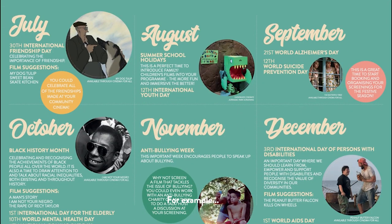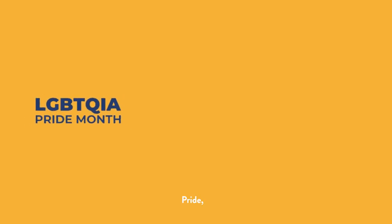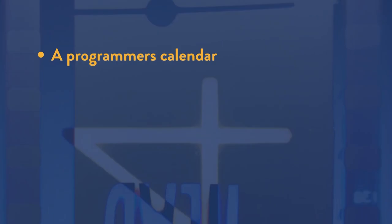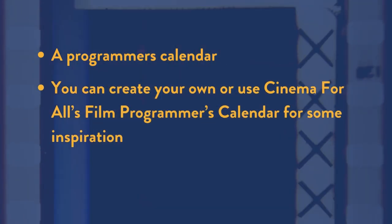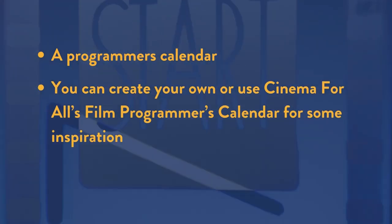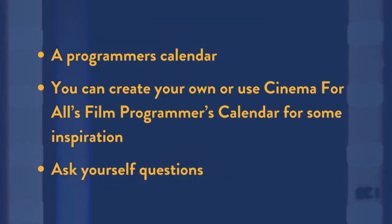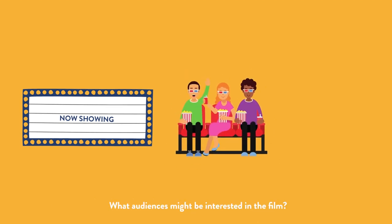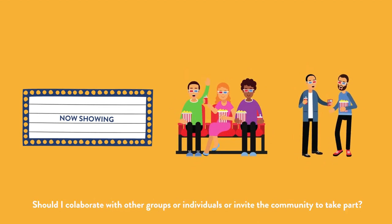For example, these can be important markers in the calendar such as Pride, Black History Month, and International Women's Day, as well as local events like a food festival or annual celebrations. You can create your own or use Cinema for All's Film Programmers Calendar for inspiration. Ask yourself questions such as: why do I think this film works in the program at our cinema? What audiences might be interested in the film? Should I collaborate with other groups or individuals?